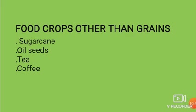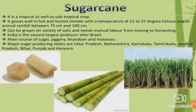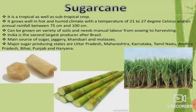Sugarcane is a tropical as well as subtropical crop. It grows well in hot humid climate with a temperature of 21 to 27 degrees Celsius and annual rainfall between 75 to 100 centimeters. It can be grown on a variety of soils and needs manual labor from sowing to harvesting. India is the second largest producer after Brazil. It is the main source of sugar, jaggery, khandsari and molasses. Major sugar producing states are Uttar Pradesh, Maharashtra, Karnataka, Tamil Nadu, Andhra Pradesh, Bihar, Punjab and Haryana.